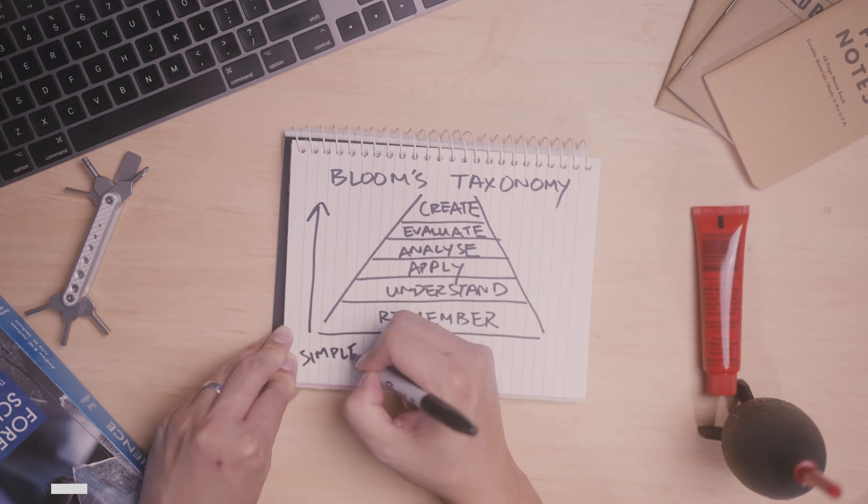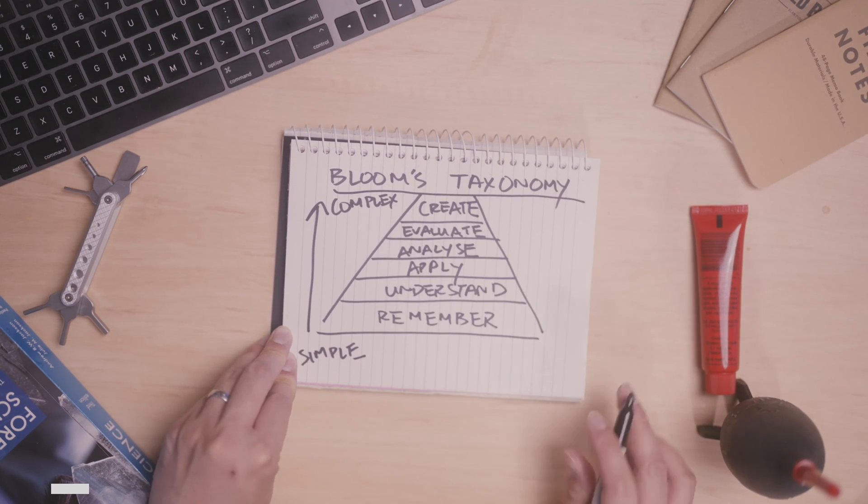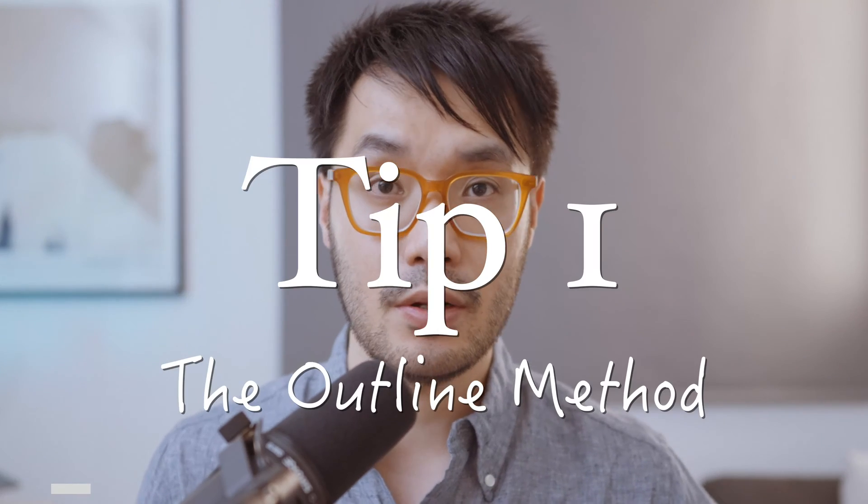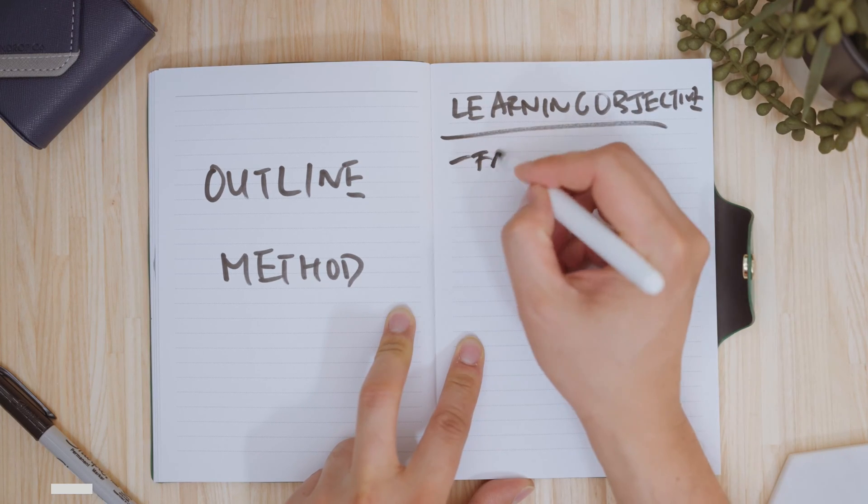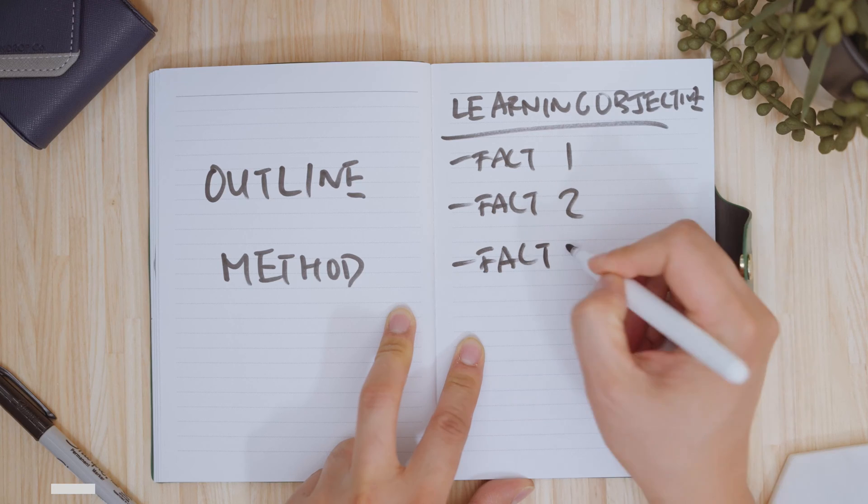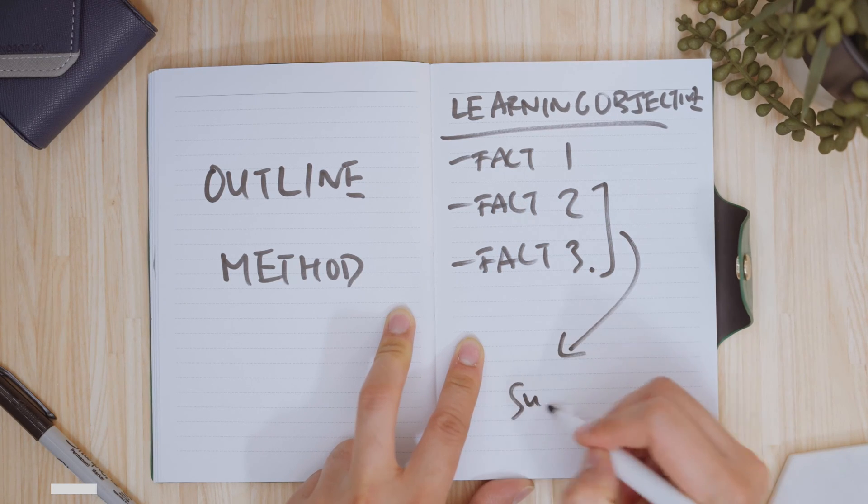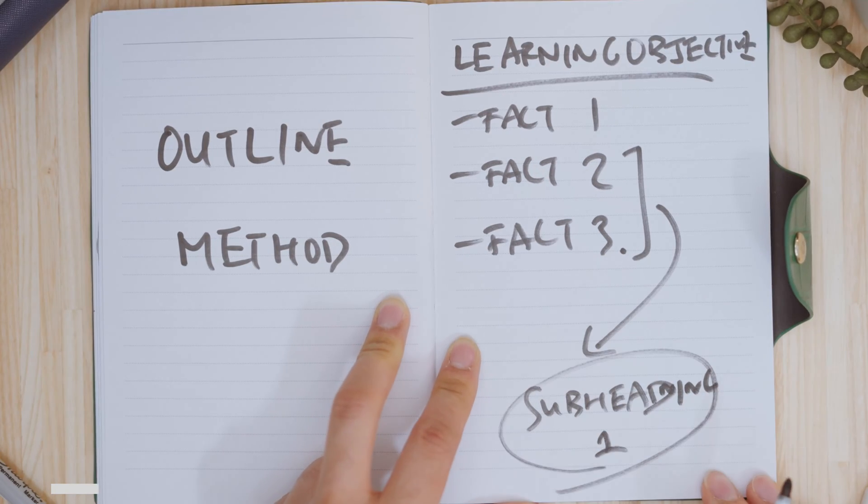Tip one: the outline method. Use the learning objectives for each class as your main headings. During class, write your notes under the right heading, then after class reorganize these concepts into more refined subheadings. There is, however, the temptation to leave your notes as a transcript of everything the teacher said, so when revising it can be hard to figure out what's most important.